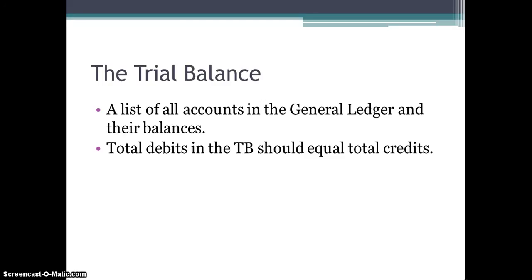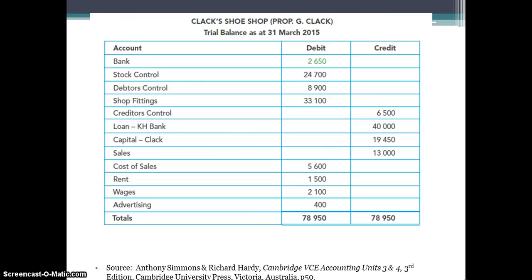Firstly, what the trial balance is — it's basically a list of all the accounts in the general ledger and their balances. The total debits in the trial balance should equal the total credits, which means that you have successfully posted all your transactions for the period.